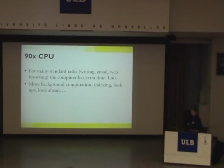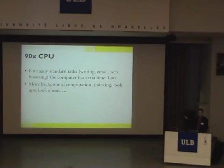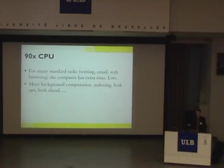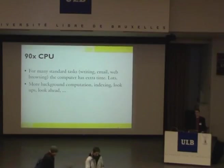But what should we do? What are the possibilities we have with 90 times the CPU? We could do a lot more. Obviously for many standard tasks users do on the desktop — writing email, web browsing — the computer has a lot of extra time. So with multi-threading, we can do a lot of background computation — like indexing, looking ahead, trying to figure out what the user may want to do and preparing that information.